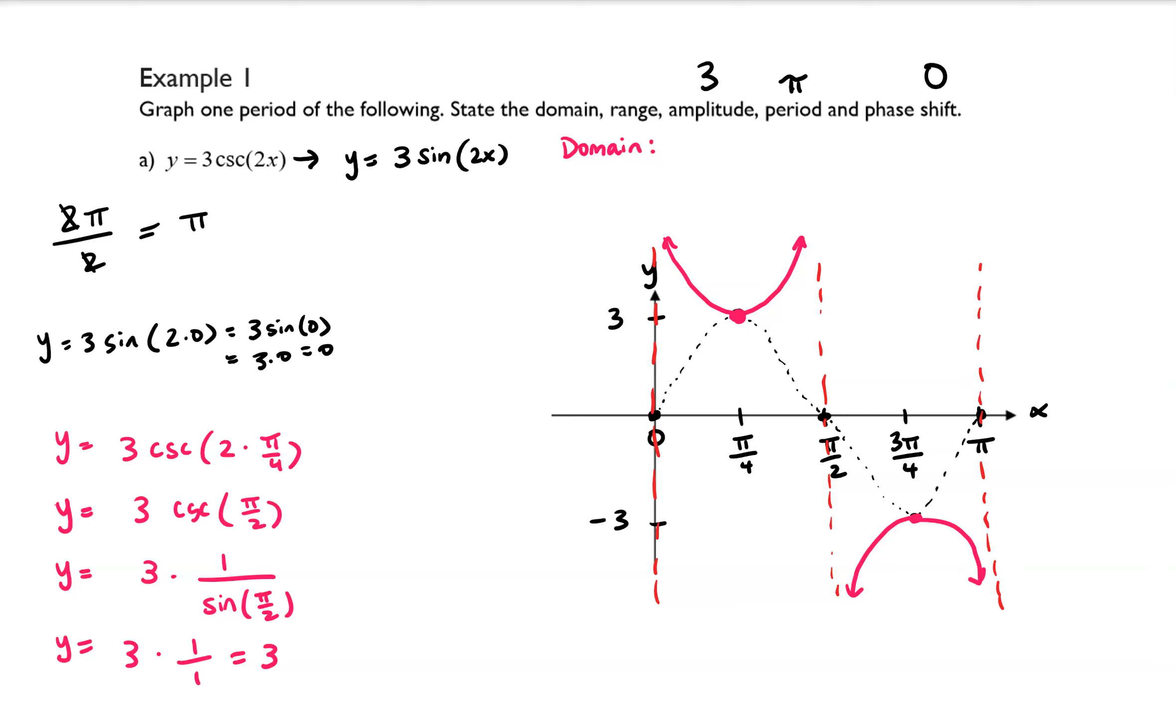So how are we going to write that? Well, that's going to be x is not equal to integer multiples of pi over 2, so x does not equal n times pi over 2, where n is an integer. So that's how we would write that.